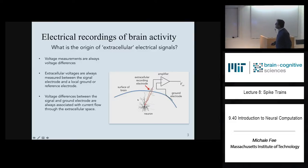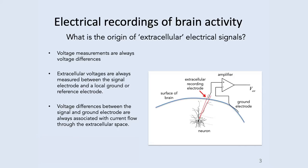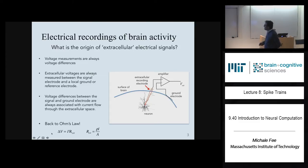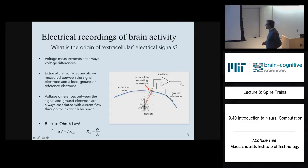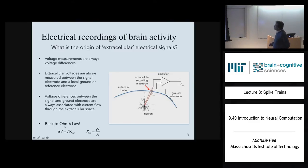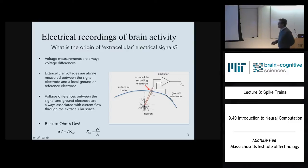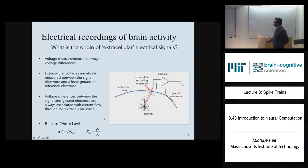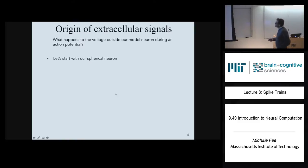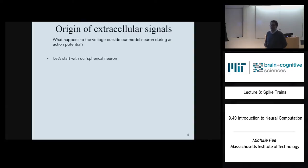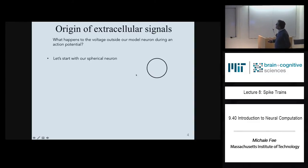The voltage that we measure in the brain — voltage changes — are usually associated with current flow through the extracellular space. We can analyze this in terms of Ohm's law: the voltage changes are going to be associated with some current through extracellular space times some effective resistance in the extracellular space. The effective resistance of extracellular space is proportional to the resistivity in extracellular space times a length scale divided by an area scale.